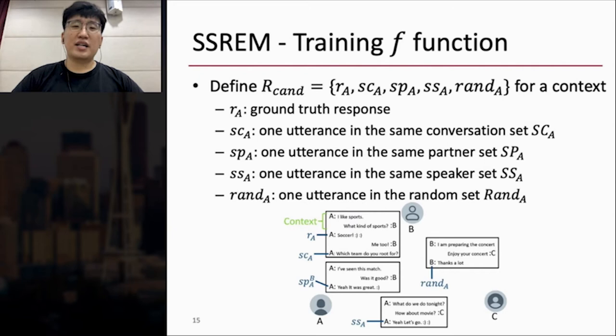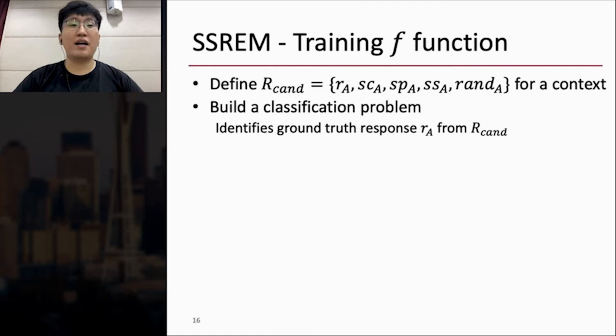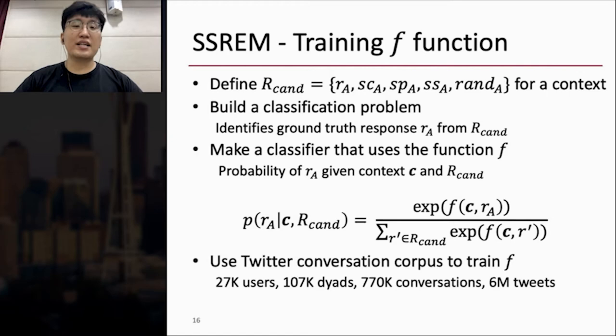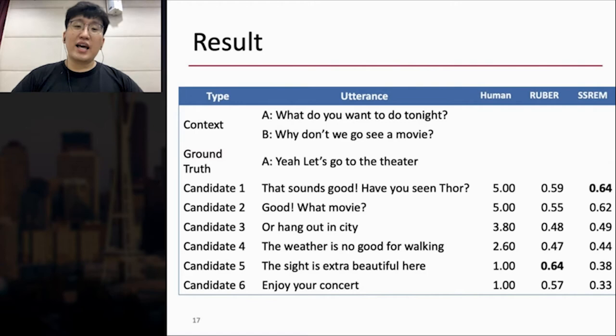Then how can we train the F function? So to do that, first, I define a set of candidate utterances for the context. The elements of the set are RA, which is ground truth response for the context, and four false utterances from SC, SP, S, and Random categories. And I build a classification problem that identifies ground truth response RA from R-can. To solve the problem, I make a classifier that uses the function F by defining the probability of RA given context C and R-can. And now I need to maximize this probability by dataset. So I use Twitter conversation corpus to train F function. And actually, this is one type of self-supervised learning. And unlike RUBER, SSREM has a positive correlation with human scores.